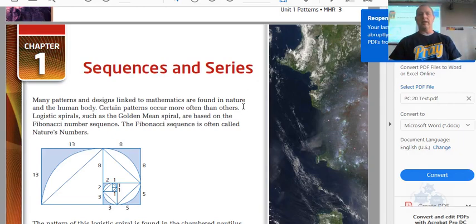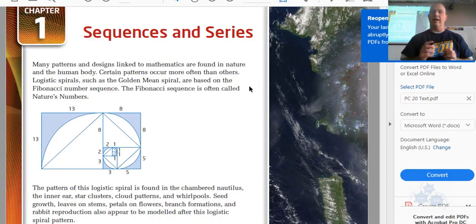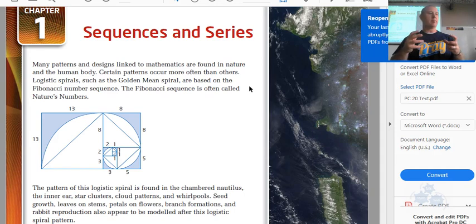Okay, so pre-calculus 20, the first section we're talking about sequences and series. We just talked about the golden ratio, or the golden rectangle.